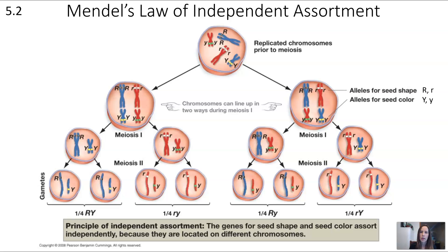Here's another diagram showing the law of independent assortment — a good review diagram showing everything in one spot. The principle is defined specifically for this example: the genes for seed shape and seed color assort independently because they are on different chromosomes. Seed shape is big R or little r, where big R stands for round; seed color is big Y or little y, where big Y stands for yellow. These two traits are not connected to one another because of independent assortment.